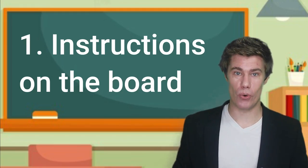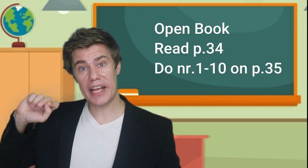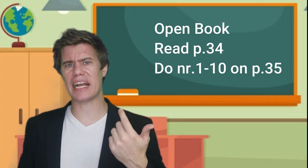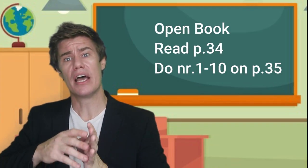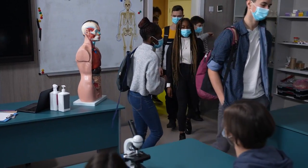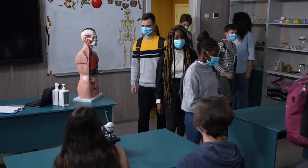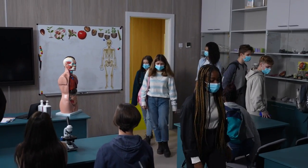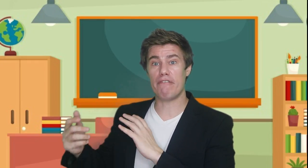Number one: instructions on the board. Before class starts, write the instructions on the board. Tell students what book to take out, what unit to read, what activities or worksheets they should immediately start with as soon as they sit down. When they enter class, engage them. Ask them questions about how they're doing, what they did last weekend, what is something special happening that week. It shows them that you are interested in their lives and also conditions them to open up and take part in class activities. Once they sit down, they start by following their instructions and get to work.